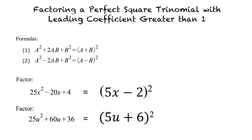So just to make sure I have this right: we need to make sure our equation fits one of the two formulas, and when we choose the correct formula, we find the square root of the first term and the square root of the third term, and add or subtract them depending on the original equation's middle term sign. Exactly, that is correct.